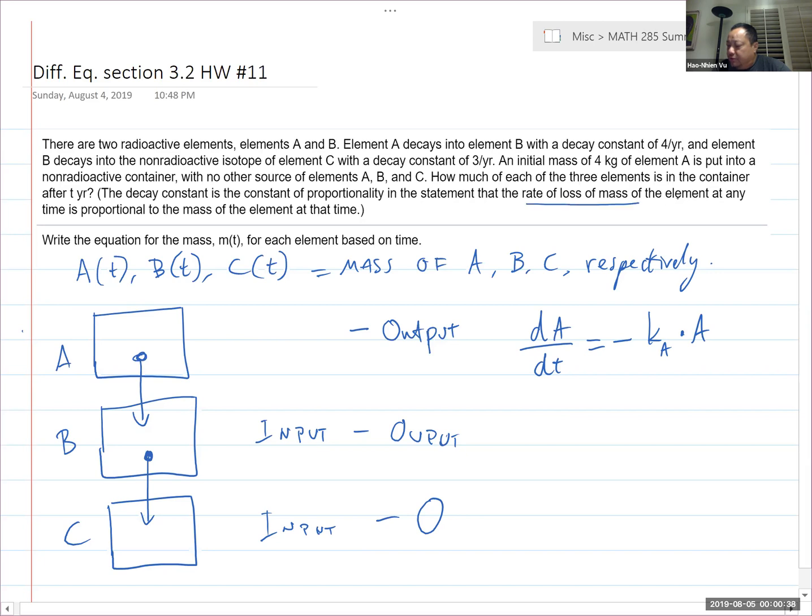The rate of loss is proportional to the mass of the element. So the dA/dt is proportional to A, and because it's a loss, minus the output, so I go minus K of A. Well, where does this output go? It goes into B. Like this output of A becomes the input of B.